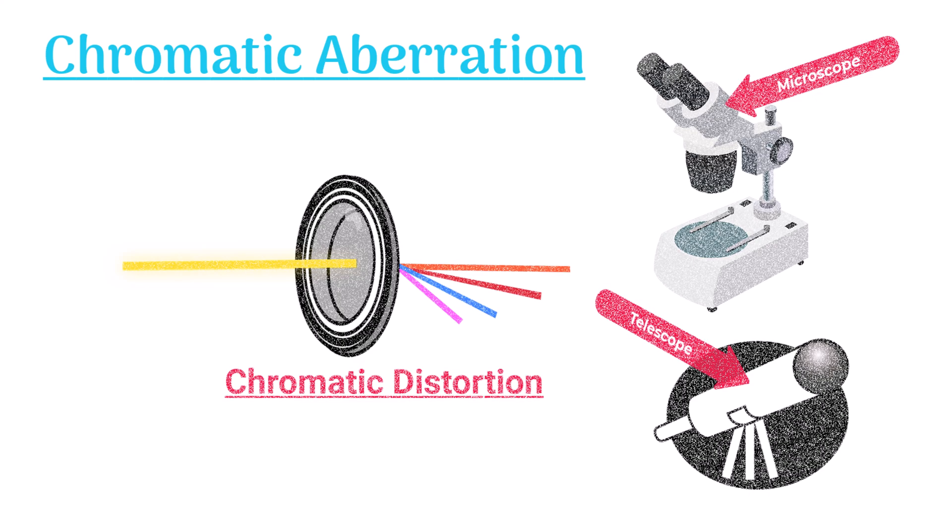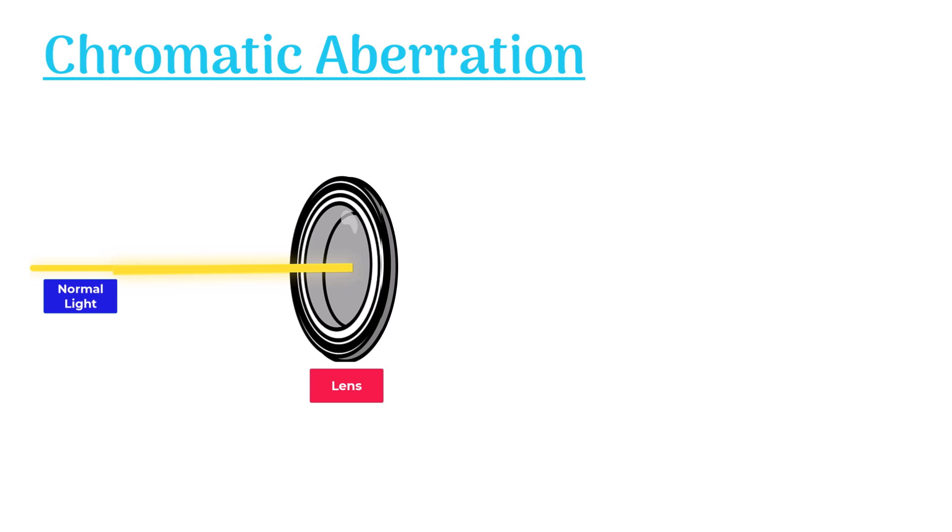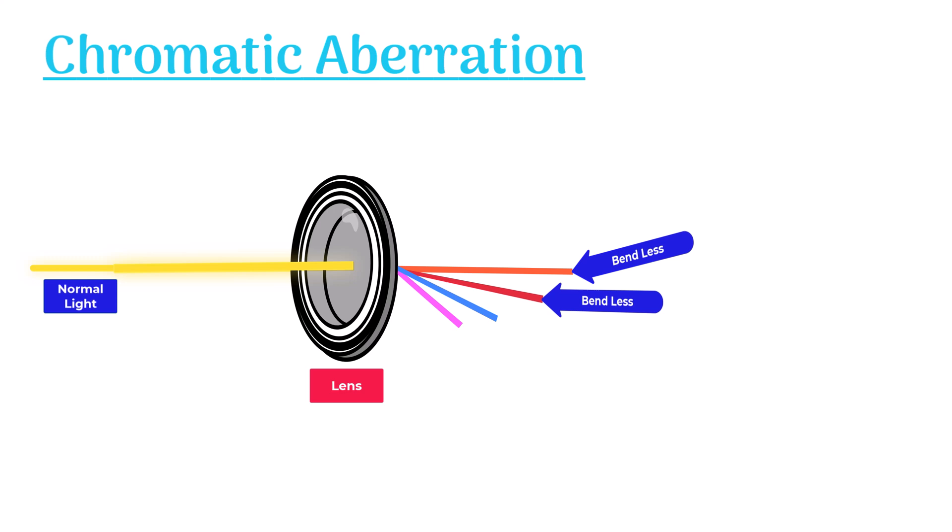This issue arises when normal light passes through a lens. The lens splits this light into different colors. The lens should focus all colors on a single focal point, but it fails because each color has a different wavelength. So some bend less and some bend more, thus they fall on different focal points.